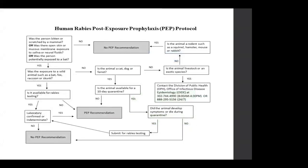The human rabies post-exposure prophylaxis or PEP protocol algorithm can be found on the state rabies website as a reference. It is important to take into consideration what kind of animal the person was bitten by. If it is not a mammal commonly known to be a carrier of the rabies virus, then PEP is not recommended. If the animal is available for a 10-day quarantine and develops symptoms or dies during quarantine and lab tests are confirmed or indeterminate, PEP is recommended. If the animal did not die or develop symptoms within the 10-day quarantine, testing usually does not occur and PEP is not recommended.